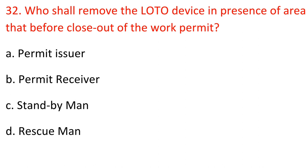Question 32: Who shall remove the lotto device in the presence of the area owner before close-out of the work permit? A. Permit issuer. B. Permit receiver. C. Standby man. D. Rescue man. Answer: A. Permit issuer.